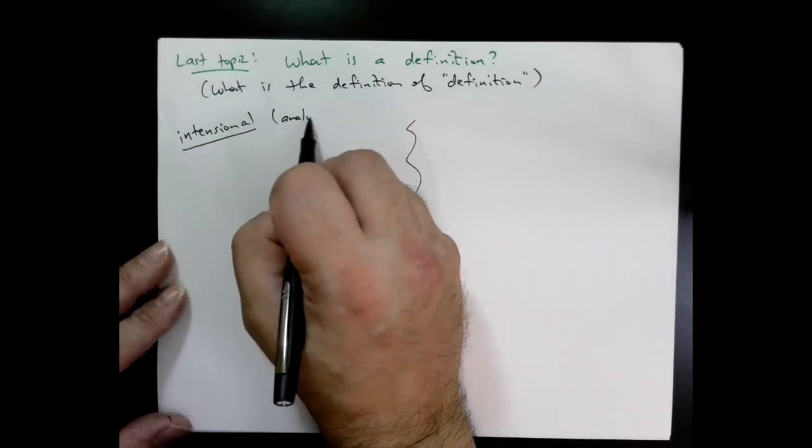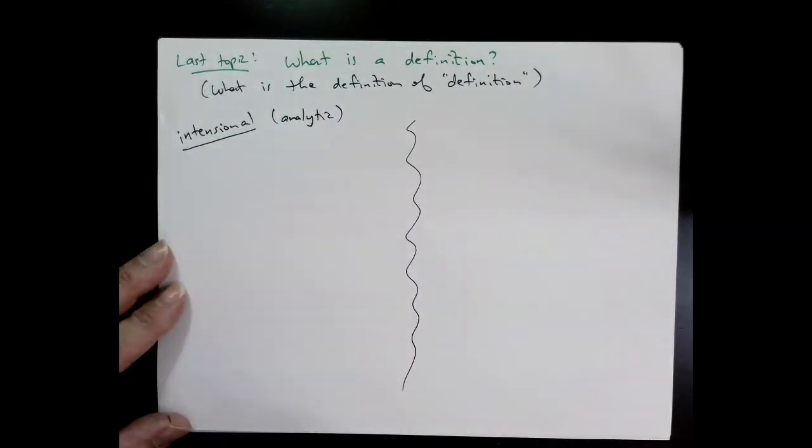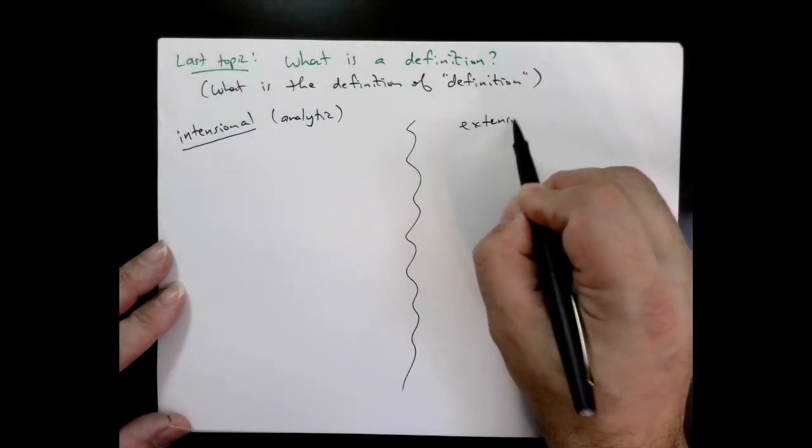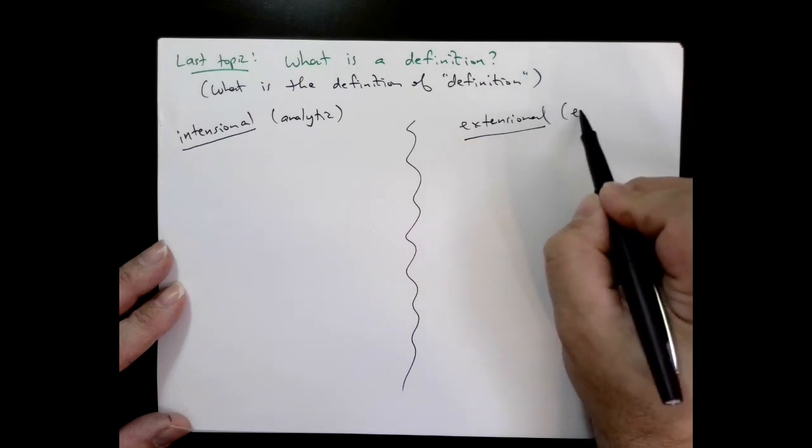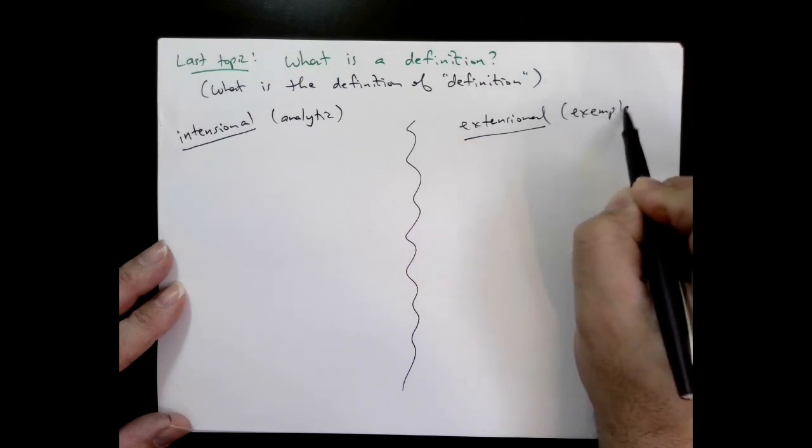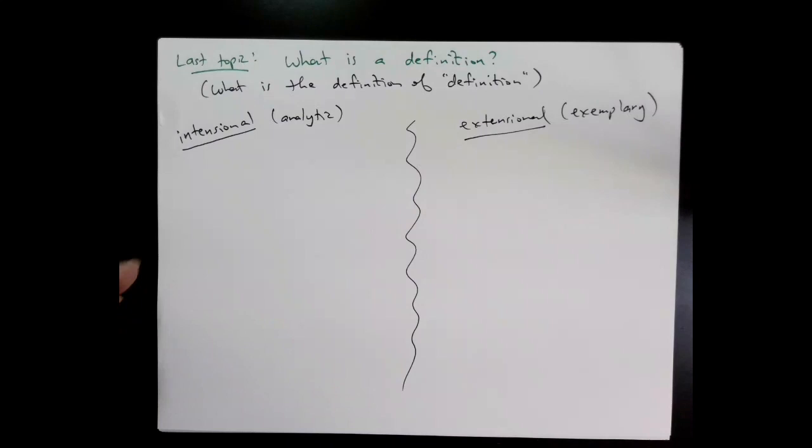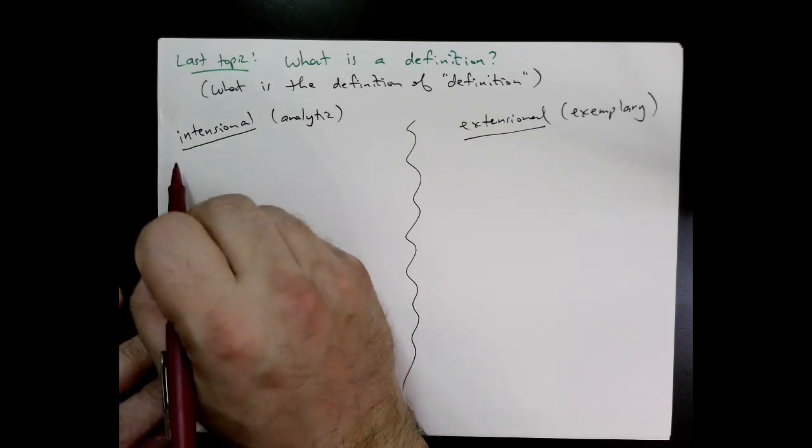Those are what are called intentional or analytic definitions and extensional or exemplary definitions. Basically, analytic definitions tell us the essence of an object and its properties, whereas the exemplary definitions, the extensional definitions, give us examples or collections that allow us to figure out what the pattern is.